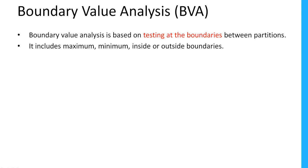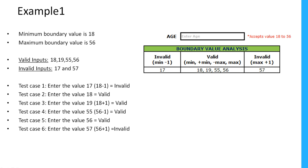Let's see a few examples. In this first example I have an age field which will accept 18 to 56. The minimum boundary is 18 and the maximum boundary is 56.